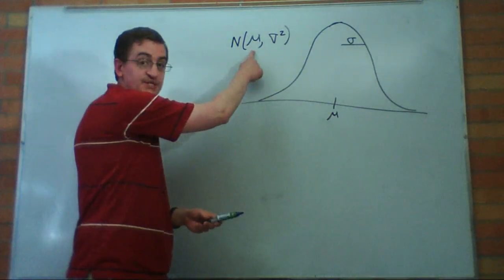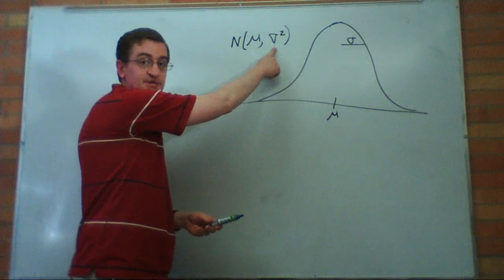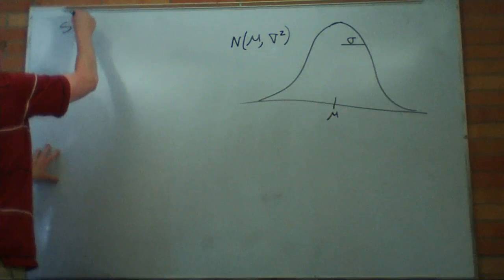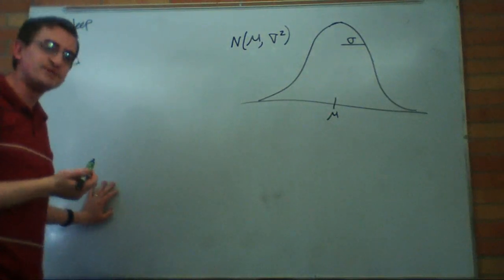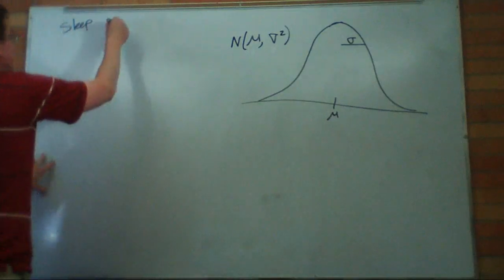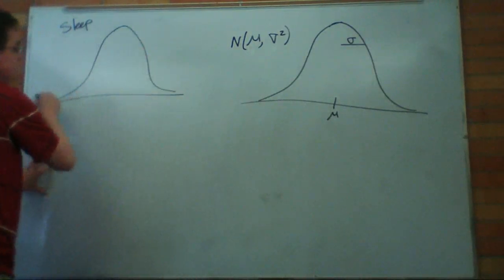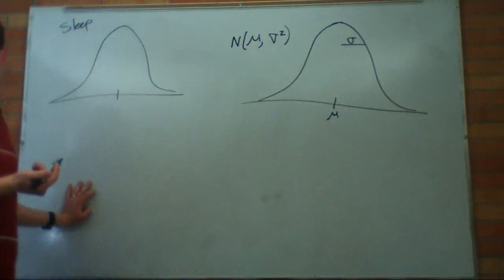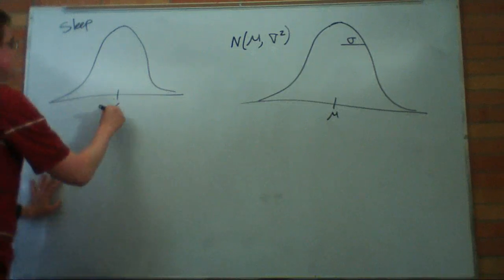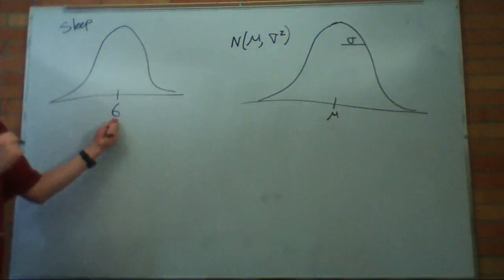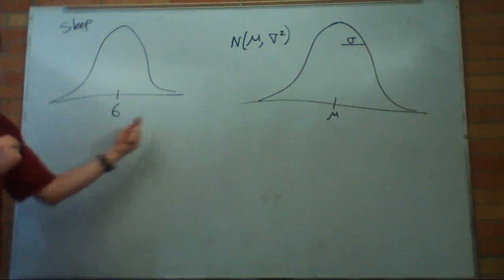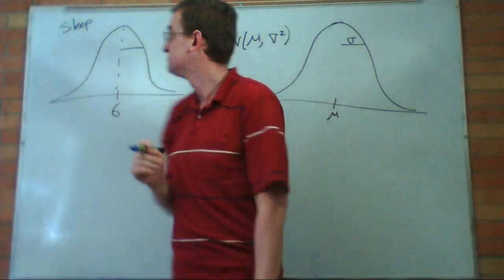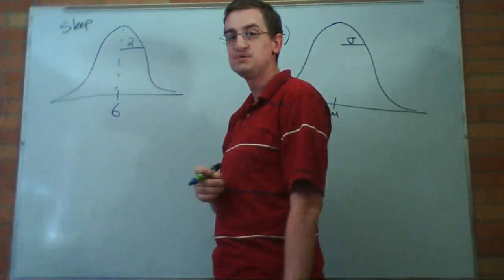Let's do an example. Let's talk about the amount of sleep that people get. Is sleep really normally distributed? Let's pretend it is. What do you think is the average amount of sleep that a college student gets? Seven hours? Six? Cameraman says six, we'll go with six. So this is our average. Some people get less and some people get more.